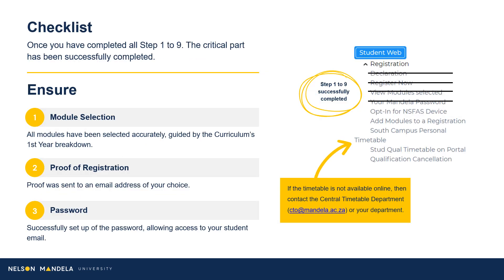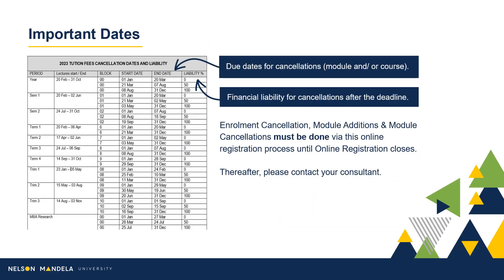Please pay careful attention to this checklist to ensure you have completed all important steps of this process. Some important dates to note: on screen is a table detailing the financial implications involved in late module cancellation. The first column indicates the period in which the module is offered, the start and end date for module cancellations, and the financial percentage liable for payment in the event of late cancellations. Please note, enrollment, cancellations, and module amendments must be done by you using this online registration process until online registration closes. Thereafter, please contact your administrative consultant for assistance.